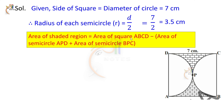The area of square formula is side squared. The area of each semicircle is 1 by 2 into π r squared. So the expression becomes: area of square minus bracket of 1 by 2 into π into r squared, plus 1 by 2 into π into r squared.